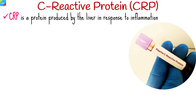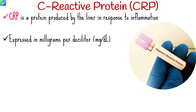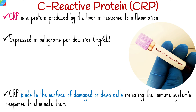C-reactive protein is a protein produced by the liver in response to inflammation. It is measured in blood and expressed in milligrams per deciliter. CRP binds to the surface of damaged or dead cells, foreign substances, and bacteria, initiating the immune system's response to eliminate them.